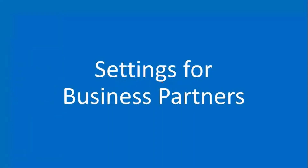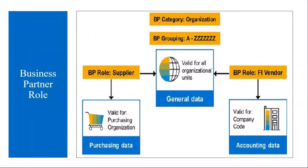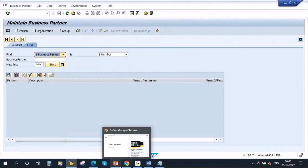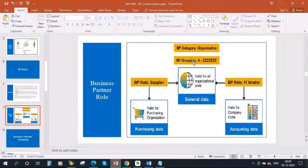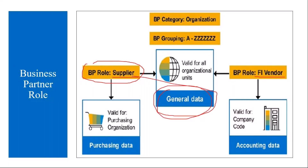Now we will start with the BP roles. When you create a business partner, there will be a category first, then you have business partner grouping. Now we are discussing the roles. The role can be supplier, FI vendor, and there is a role for general data. For the supplier role, you maintain the data for the purchasing organization. For the BP role FI vendor, you maintain the data for the company code, which is accounting data. And you maintain the general data.